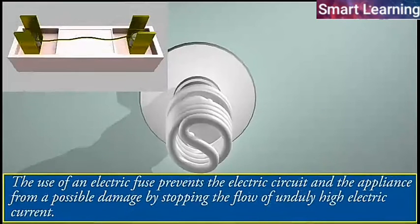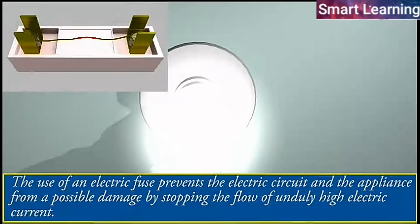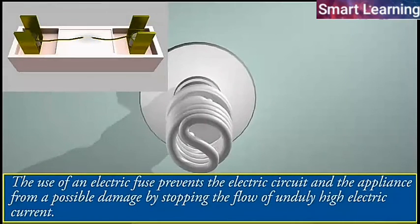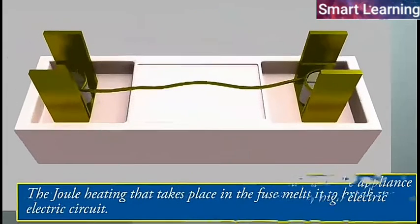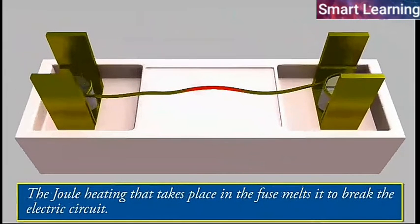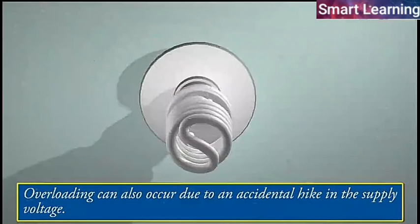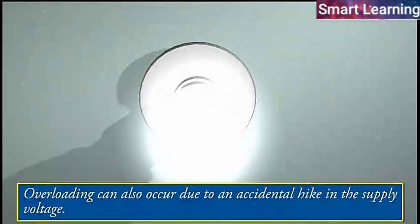The use of an electric fuse prevents the electric circuit and the appliance from a possible damage by stopping the flow of unduly high electric current. The Joule heating that takes place in the fuse melts it to break the electric circuit. Overloading can also occur due to an accidental hike in the supply voltage.